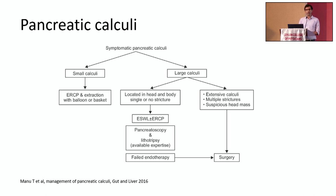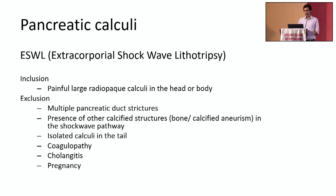Exclusion criteria for ESWL include multiple pancreatic duct strictures, isolated calculi in the tail, presence of cholangitis or coagulopathy, pregnancy, and calcified structures in the shockwave pathway. Patients with extensive calculi, multiple strictures, or suspicion of pancreatic head mass are not suitable for ESWL or ERCP and should be offered surgery directly. For pancreatic duct strictures, treatment options include ERCP with plastic or metal stenting, balloon dilatation, and surgery for multiple or resistant strictures.